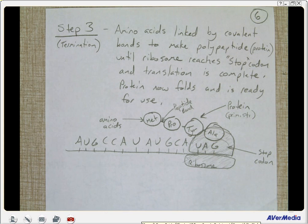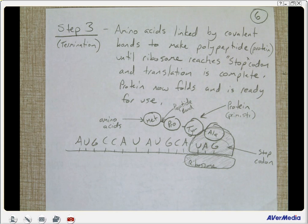Step three: amino acids are linked together by covalent bonds to make the polypeptide protein until the ribosome reaches a stop codon and translation is complete. The protein now folds and is ready to be used. This ends part two of Chapter 17 notes.